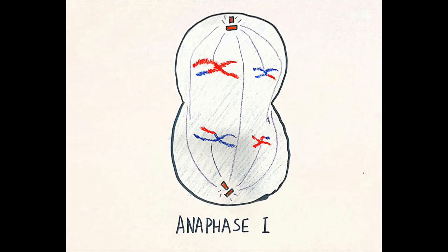In anaphase I, the spindle fibers contract and pull the homologous pairs, each with two chromatids away from each other and toward each pole of the cell. The cell elongates in preparation for division along the center. Only the cohesin from the chromosome arms is degraded.